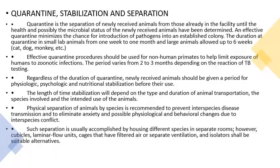When placing new animals in cages, testing for microbial status is important as they may be ill. This quarantine is very important — one week for small animals and up to six weeks for large animals. For non-human primates, quarantine will prevent exposure of humans to zoonotic infections, and the quarantine period may vary from two to three months depending on TB testing results.